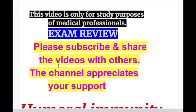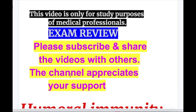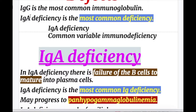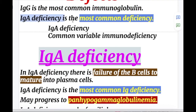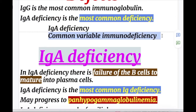In this video we'll do an exam review on immunoglobulin A, IgA deficiency, and common variable immunodeficiency. Immunoglobulin G is the most common immunoglobulin, but immunoglobulin A deficiency is the most common deficiency. We'll discuss IgA deficiency and common variable immunodeficiency.